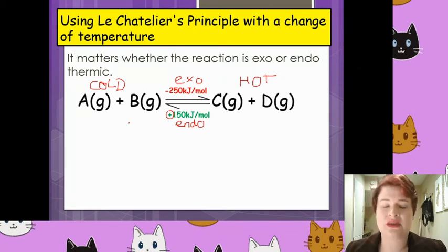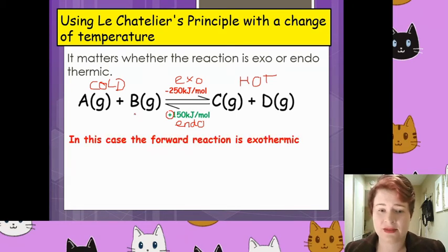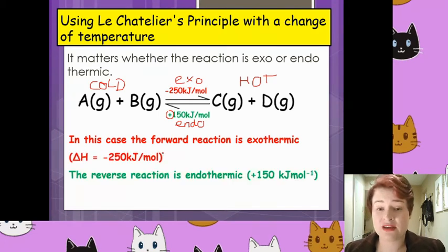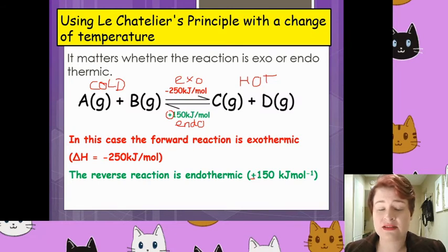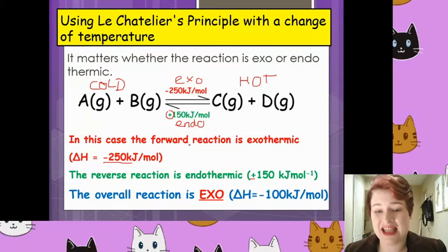As described, the forward reaction is exothermic, so the right-hand side is the hot side. The reverse reaction is endothermic — positive 150 kJ/mol. The forward reaction is negative 250 kJ/mol. We do the exo minus the endo: minus 250 minus 150 equals minus 100 overall. So the overall reaction is exothermic, with a delta H of minus 100 kJ/mol.